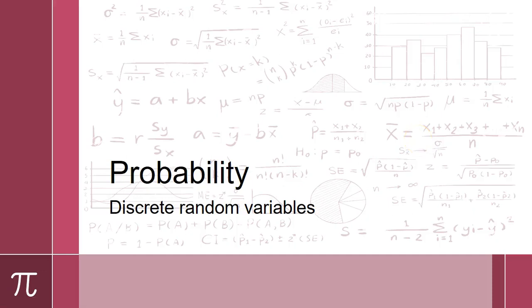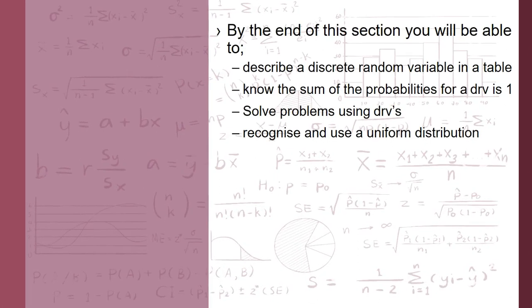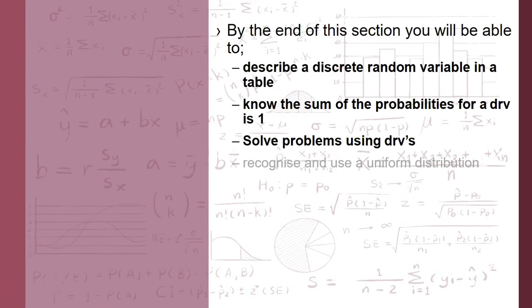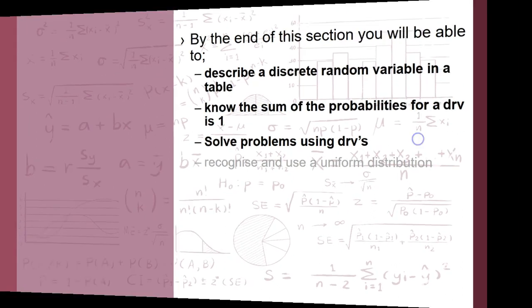Hi, and welcome to this next video. We're on the probability section of the course from statistics elements, and today we're going to be looking at discrete random variables. We're going to look at what a discrete random variable is, talk about the sum of probabilities for a discrete random variable, do some problem solving, and finally look at something called the uniform distribution.